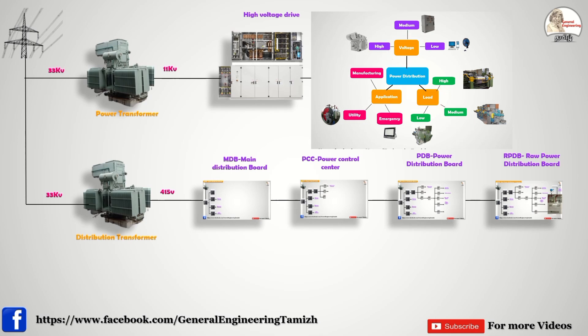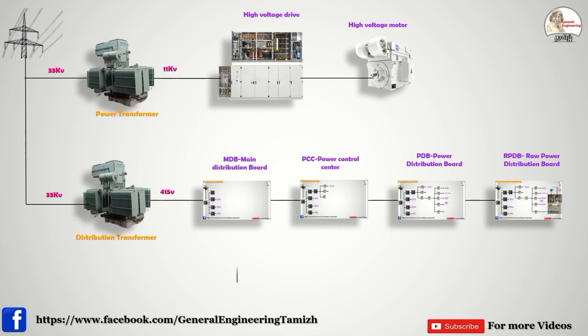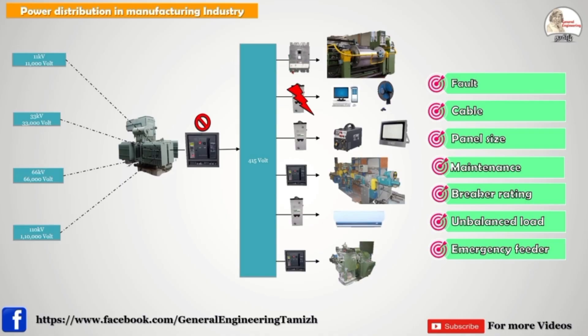The remaining part is application-oriented distribution. The utility equipments like HVAC and emergency equipments feeders are connected directly to the Main Distribution Panel. These HVAC and emergency equipment feeders should not be mingled with the regular power distribution system, which is why they connect separately to the MDB.